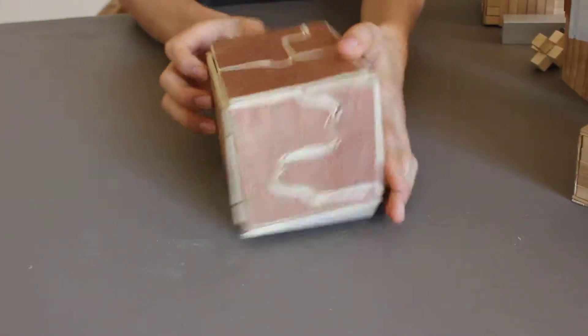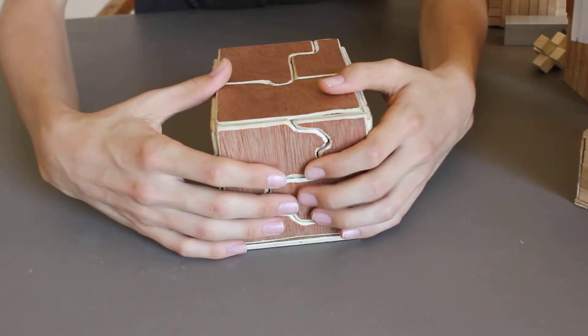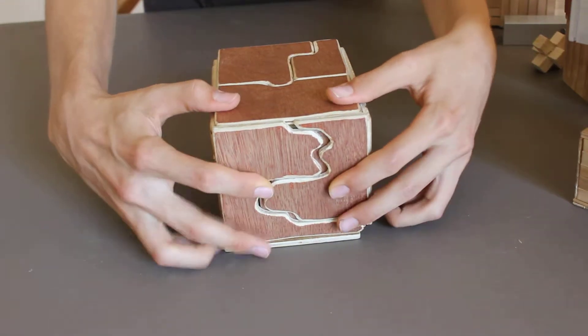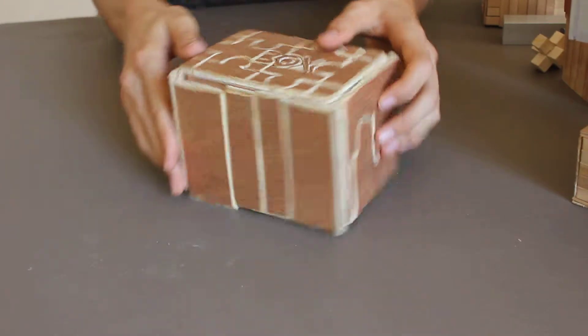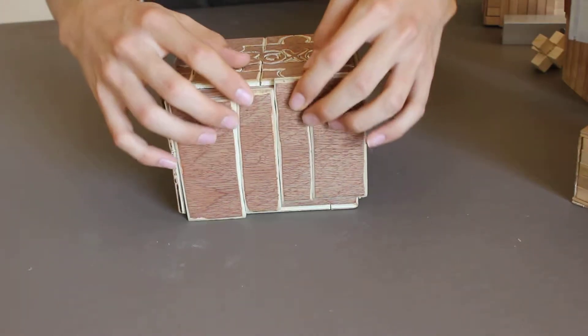So how you open this is first you pull these apart and move it up. And then there's another pattern on this side you have to get the right code.